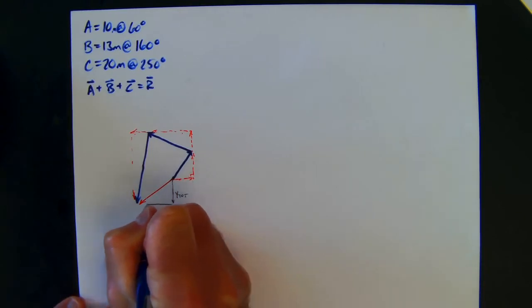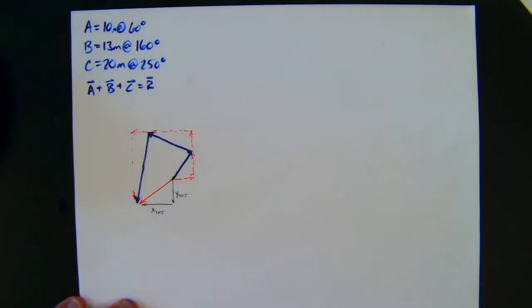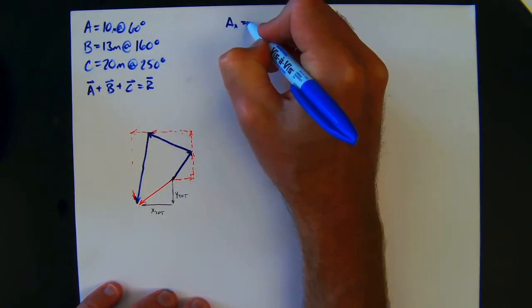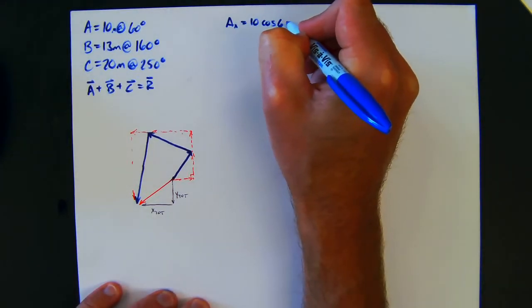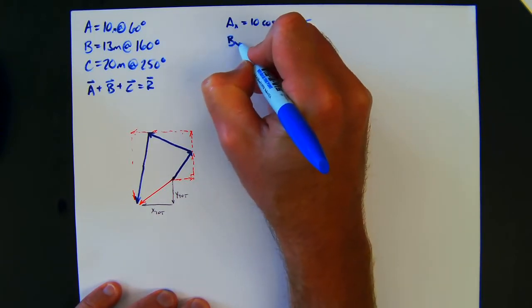Now mathematically, let's look at that. So if I'm going to break it up into components, remember we go with the saying 'y sine because x is cosine.' So Ax is going to be 10 cosine of 60, and punch that in, you get 5. And Bx is going to be 13 cosine of 160, and that'll come out to be negative 11.3.